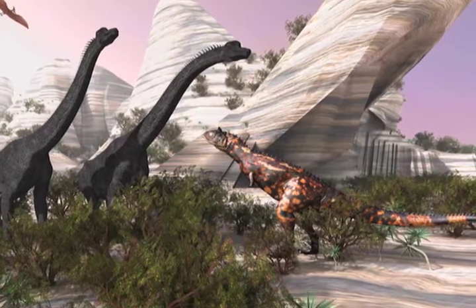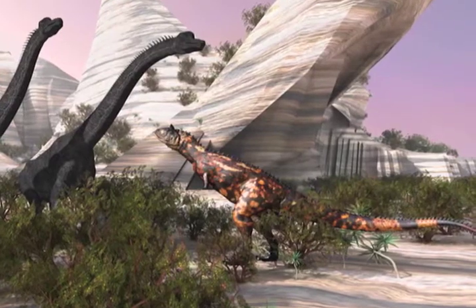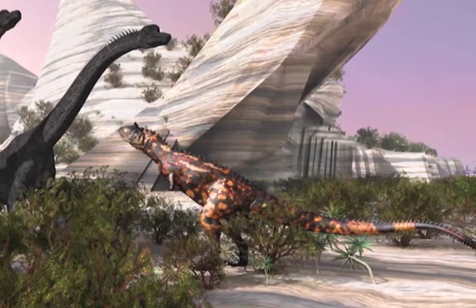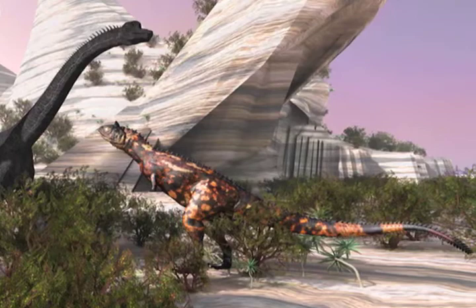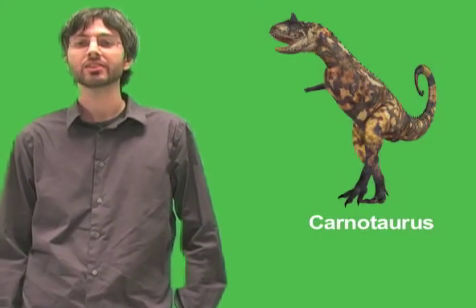Carnotaurus had somewhat unusual jaw structure. It could probably bite very quickly, but its bite was probably relatively weak, especially compared to other large meat-eating dinosaurs. This has led some scientists to speculate that Carnotaurus might have scavenged animal remains at least some of the time.